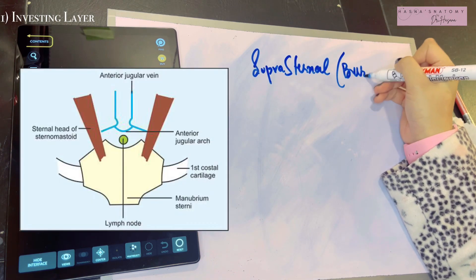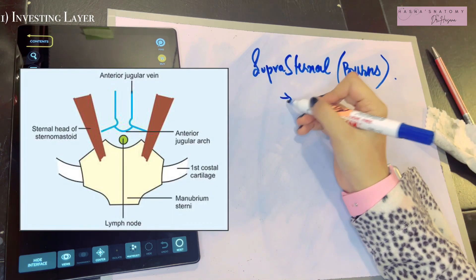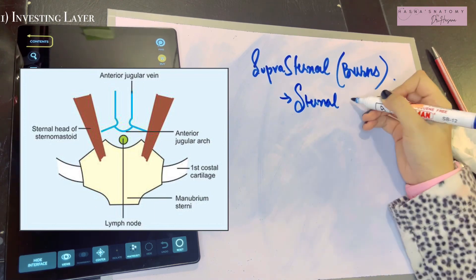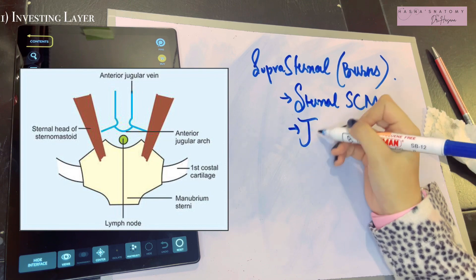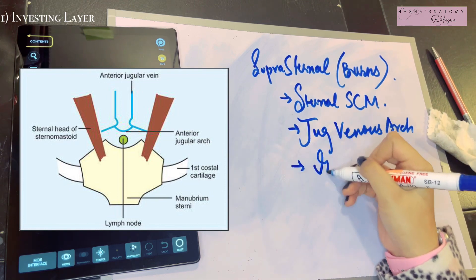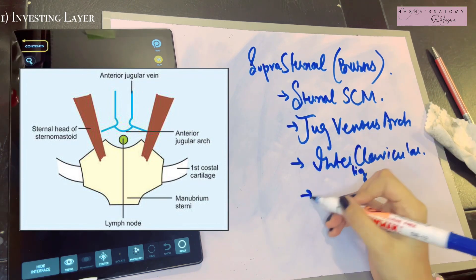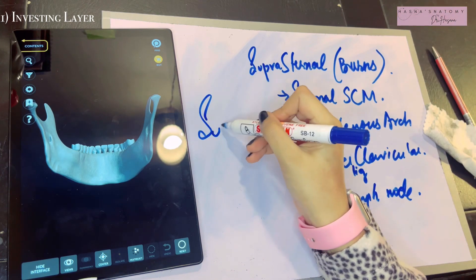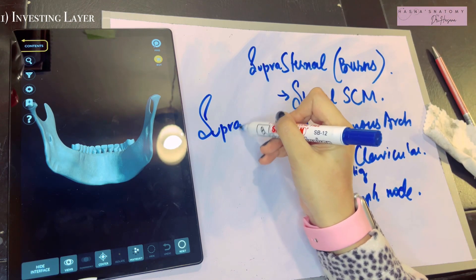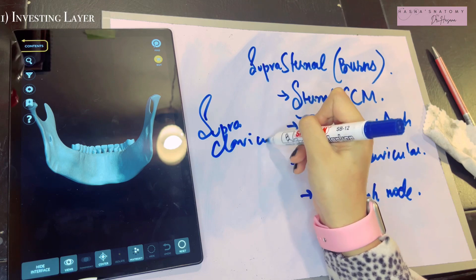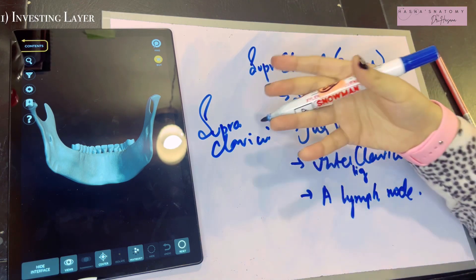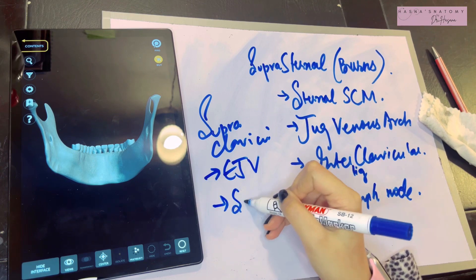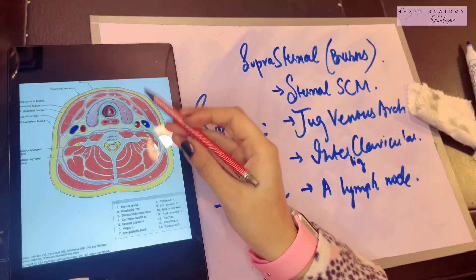Now let's talk about the spaces the investing layer encloses. The first is the suprasternal space, also known as the space of Burns. In this space lie: the sternal heads of the sternocleidomastoid, the jugular venous arch, the interclavicular ligaments, and a lymph node. Another important space is the supraclavicular space, in which lie the supraclavicular nerves, the external jugular vein, and some cutaneous vessels.